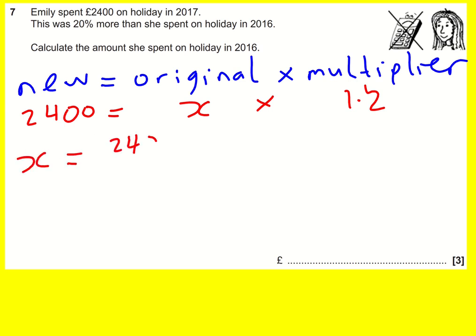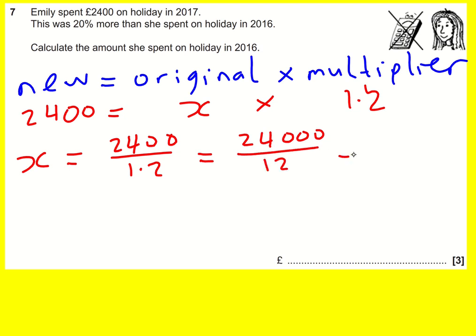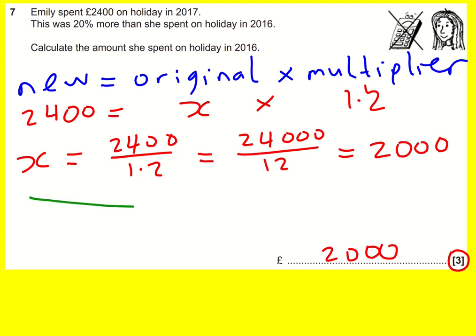I'm going to do 2400 divided by 1.2. This is a decimal division, so I change it to 24,000 divided by 12 by multiplying top and bottom by 10. Then I can do 12 into 24, which goes nicely twice, leaving me with 2000. So that's how much she spent — she spent 2000 pounds.